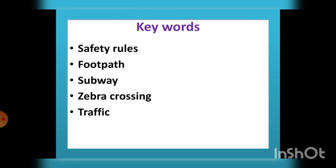Second keyword: footpath. F-O-O-T-P-A-T-H. Footpath. Third keyword: subway. S-U-B-W-A-Y. Subway. Fourth keyword: zebra crossing. Z-E-B-R-A. C-R-O-S-S-I-N-G. Zebra crossing.